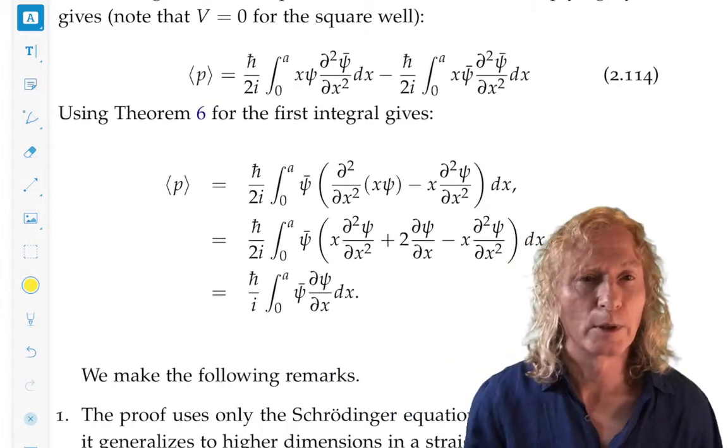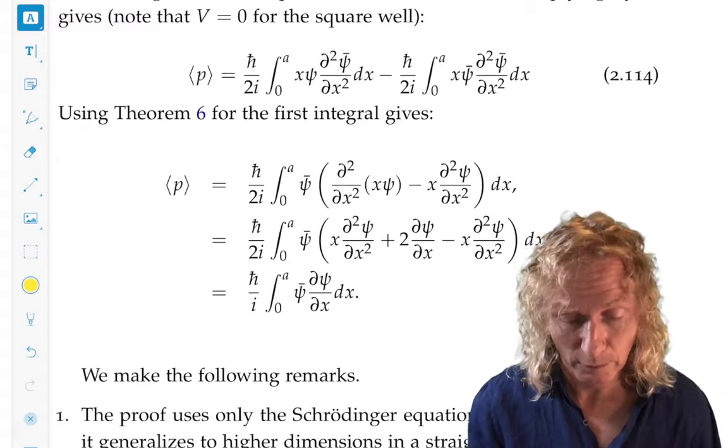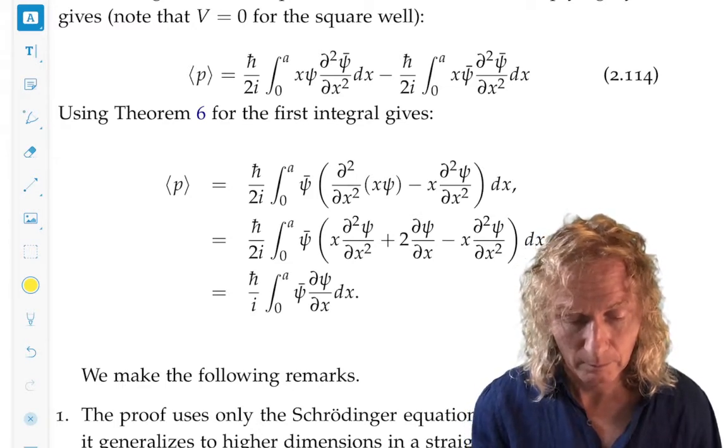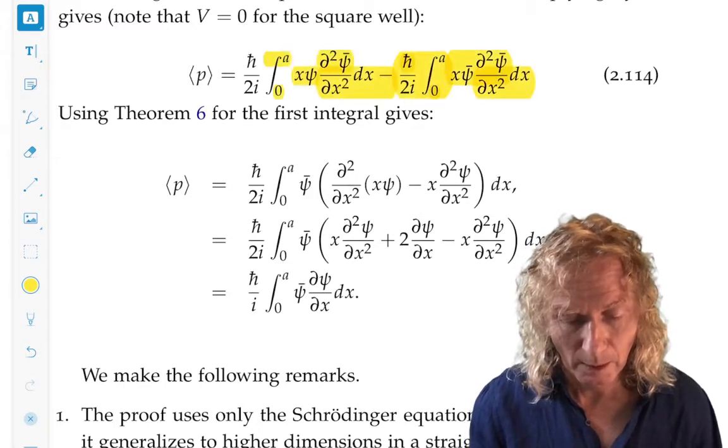Now, go ahead and put in V equals zero because we're doing this calculation for the square well. And we have this expression.